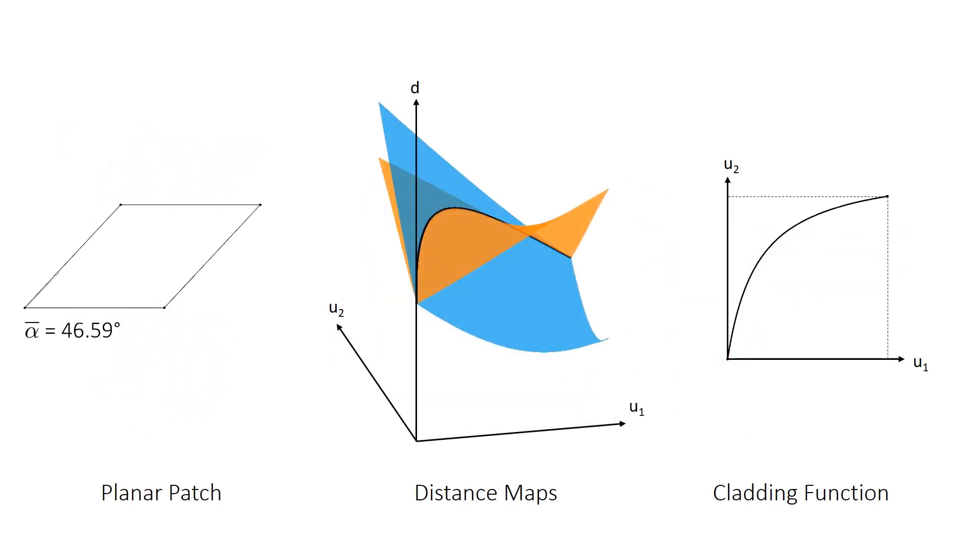We intersect the distance maps to find suitable grid members. Their distribution is determined by the cladding function, shown here on the right. Note how the shape of the planar patch, shown on the left, influences the cladding function.